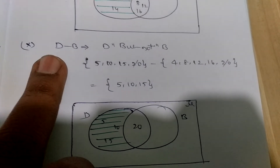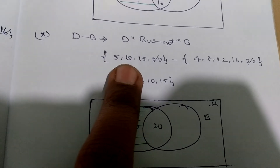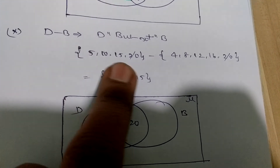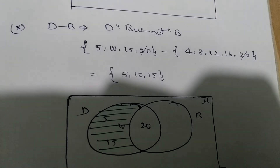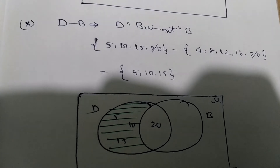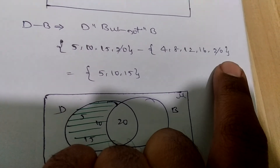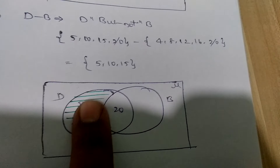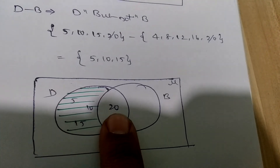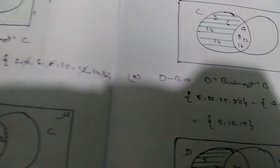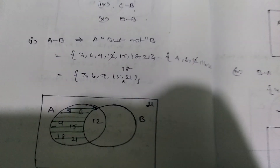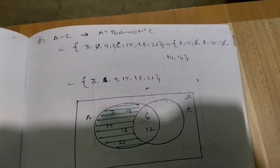Coming to the tenth one: D minus B — D but not B. Among multiples of 5 and multiples of 4, the repeated value is 20. Strike that 20, and what is left in set D is 5, 10, 15. Mention only those elements in the only-D region, not under the common region. I hope you understand this sum — it is an expected question type in your board exam. Please go through the steps once again, like my video, and subscribe to my channel.